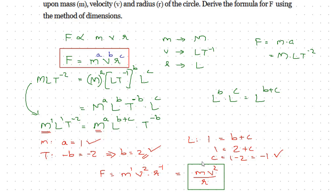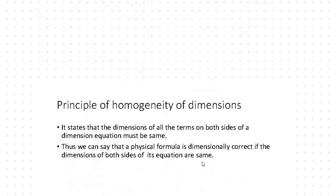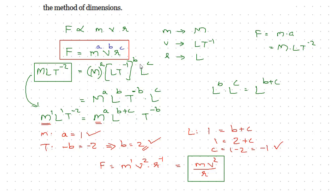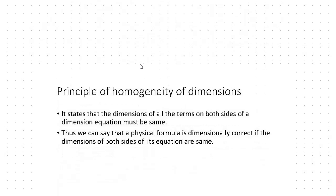This derivation is based on the principle of homogeneity of dimensions. The principle states that the dimensions of all terms on both sides of a dimensional equation must be the same. We used this by equating the dimensions on the left side of the equation to those on the right side.